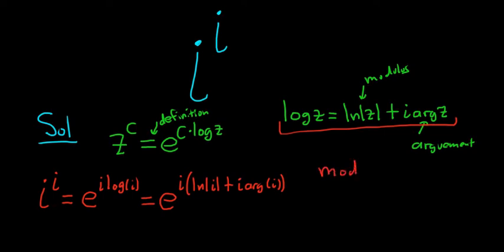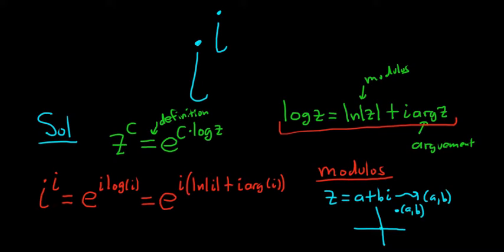So modulus, what is modulus? The modulus of a complex number is the following. If you have a complex number, you can always write it in the form a plus bi, where a and b are real numbers. That's the definition of a complex number. You can associate this with an ordered pair, and you can also think about it as a vector. Let me draw the picture here.